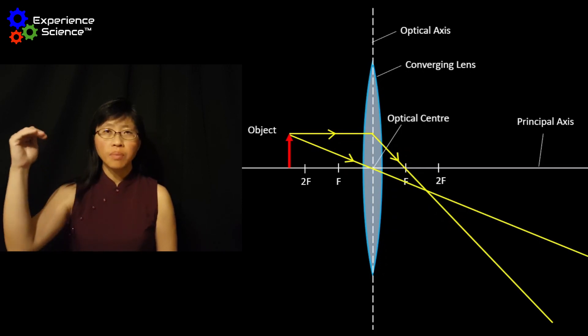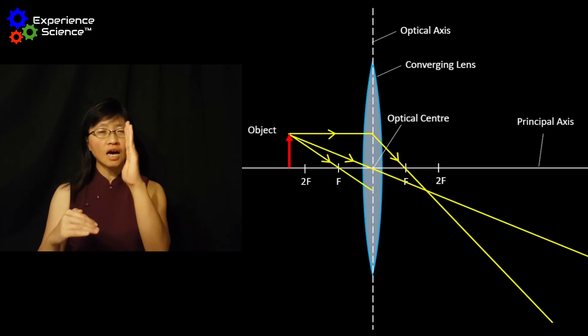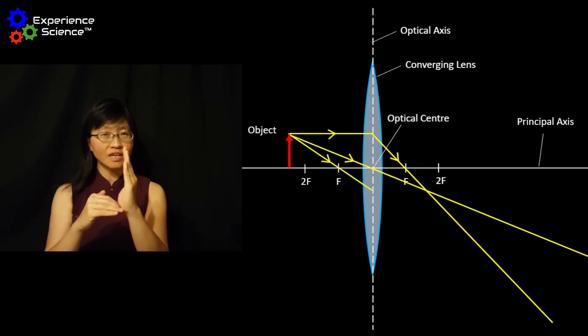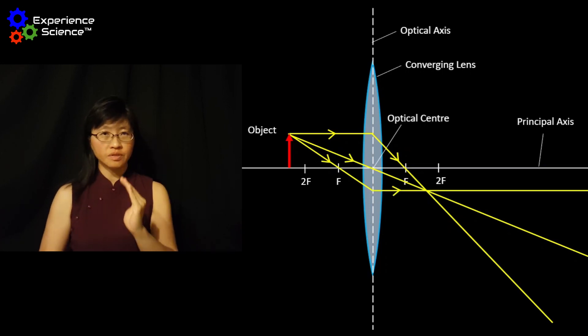The third ray will pass through the focal point on the same side of the object until it hits the optical axis of the lens. Thereafter, it will travel parallel to the principal axis.